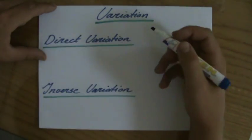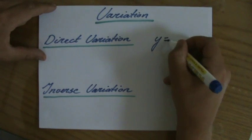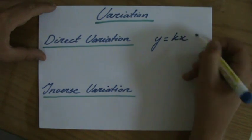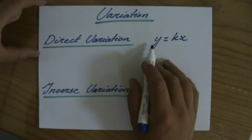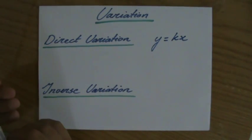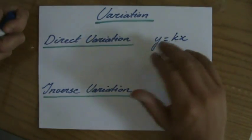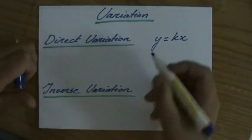And we know with direct variation the general equation is y equals kx. So if y is directly proportional to x, then y equals a particular constant times x. So you've got to find that constant and then you can create the equation belonging to that situation.